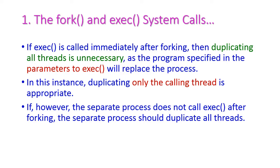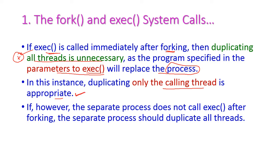If we call exec after forking, then the program specified in the parameter of exec will replace the process. In that case, duplicating all the threads is unnecessary. Duplicating only the calling thread is appropriate — duplicating just one thread is enough; we do not need to duplicate all the threads.